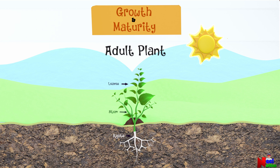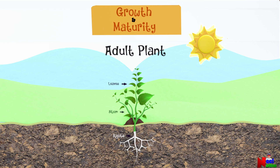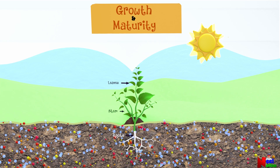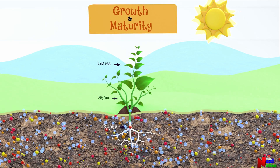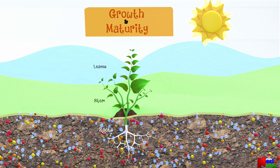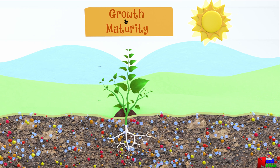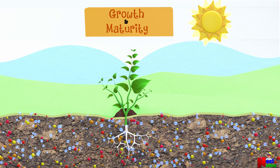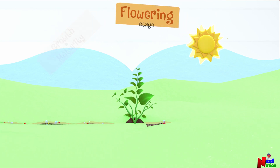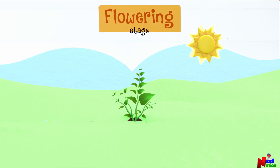A fully mature plant consists of roots, stems, and leaves. The roots draw nutrients and water from the soil, while the stem carries them to the leaves. The leaves perform photosynthesis to prepare food. This is the time when the plant is as big and strong as it can be — and it's ready for the next big step: making flowers and seeds.